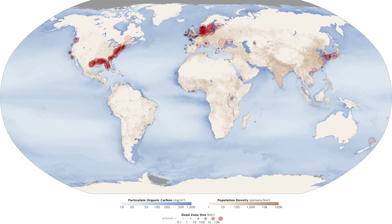Shrimp trawlers first reported a dead zone in the Gulf of Mexico in 1950, but it was not until 1970 that the size of the hypoxic zone had increased enough that scientists began to investigate. After 1950, the conversion of forests and wetlands for agricultural and urban developments accelerated. The Missouri River Basin had hundreds of thousands of acres of forests and wetlands replaced with agricultural activity, and in the lower Mississippi, one-third of the valley's forests were converted to agriculture between 1950 and 1976. In July 2007, a dead zone was discovered off the coast of Texas where the Brazos River empties into the Gulf.